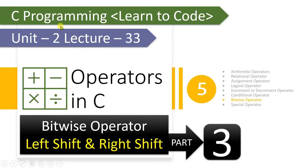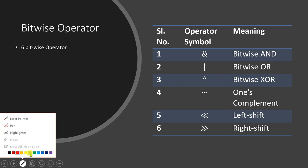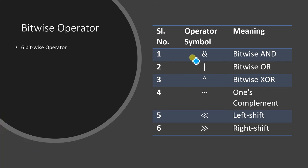Hello and welcome to the course on C programming, Learn to Code series. This is the 33rd lecture of Unit 2. In this lecture we will continue our discussion on bitwise operators, specifically left shift and right shift. We know that there are 6 bitwise operators provided by C. We already covered bitwise AND, OR, XOR, and one's complement in the previous two parts. This lecture will focus on left shift and right shift.